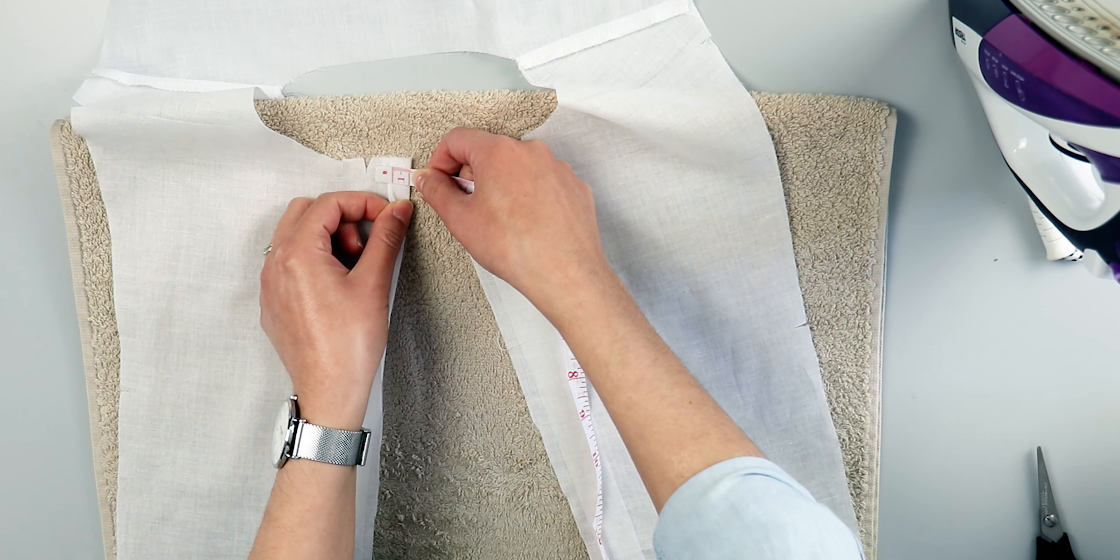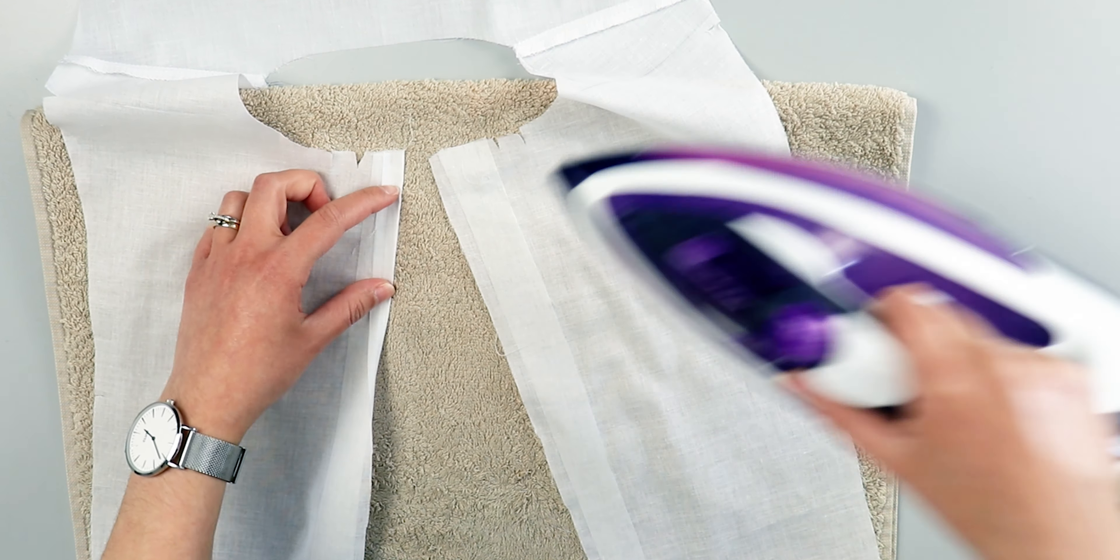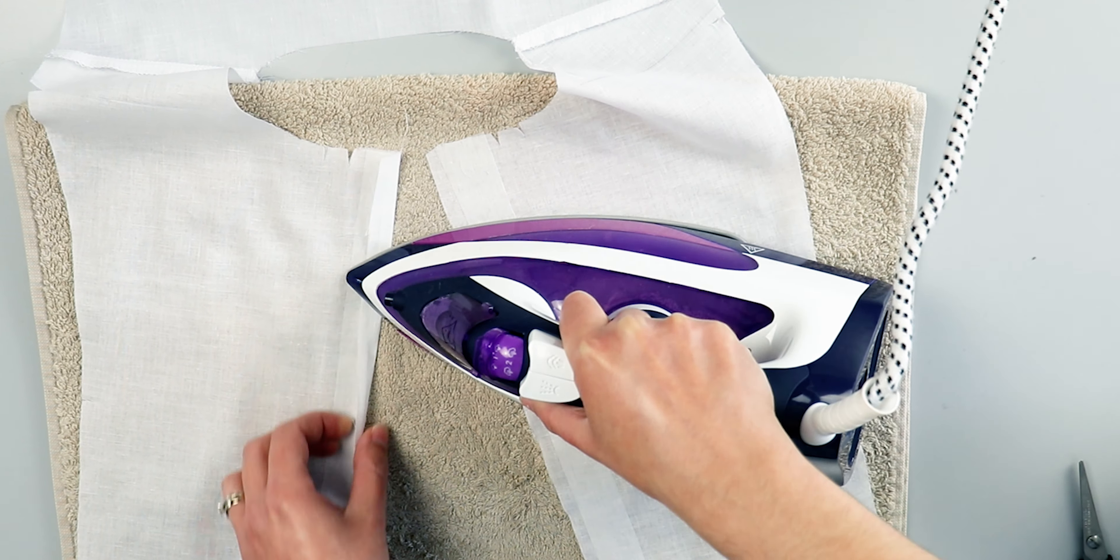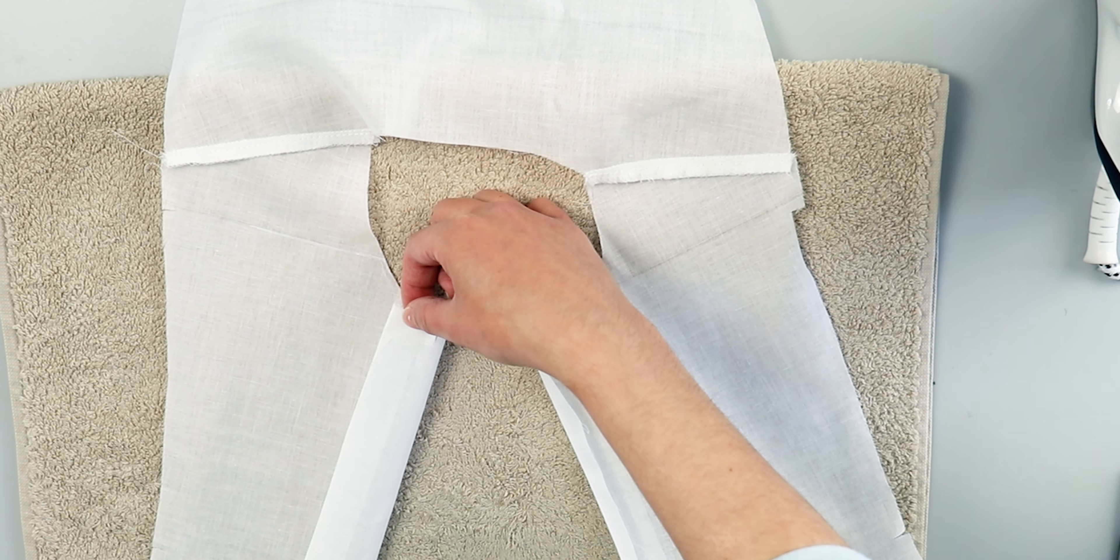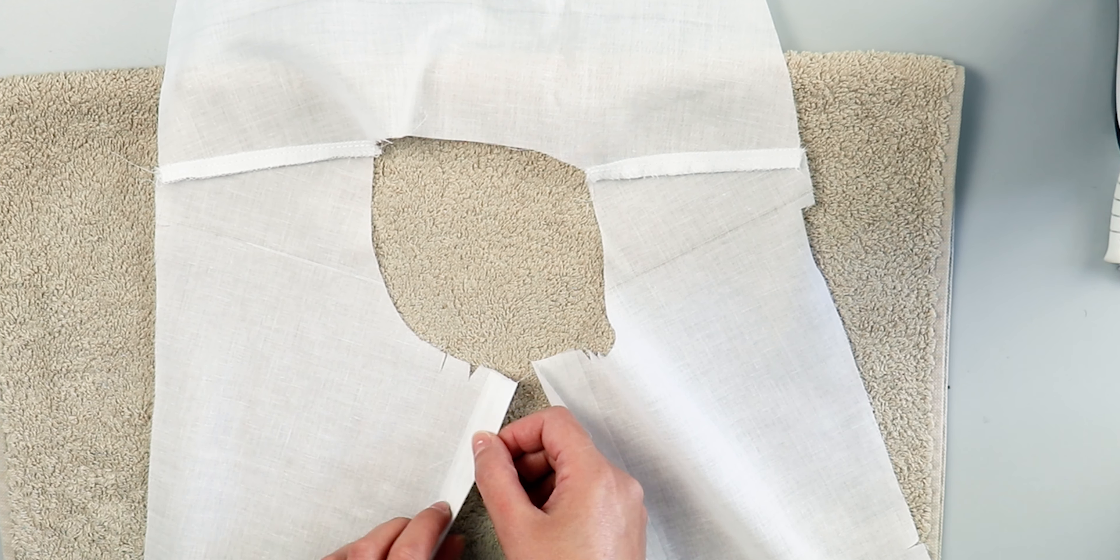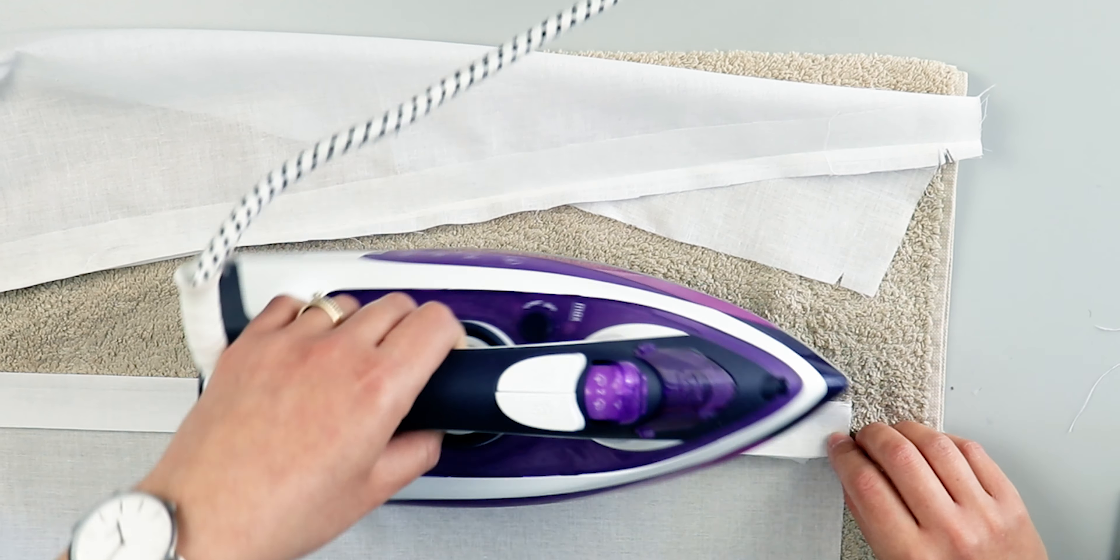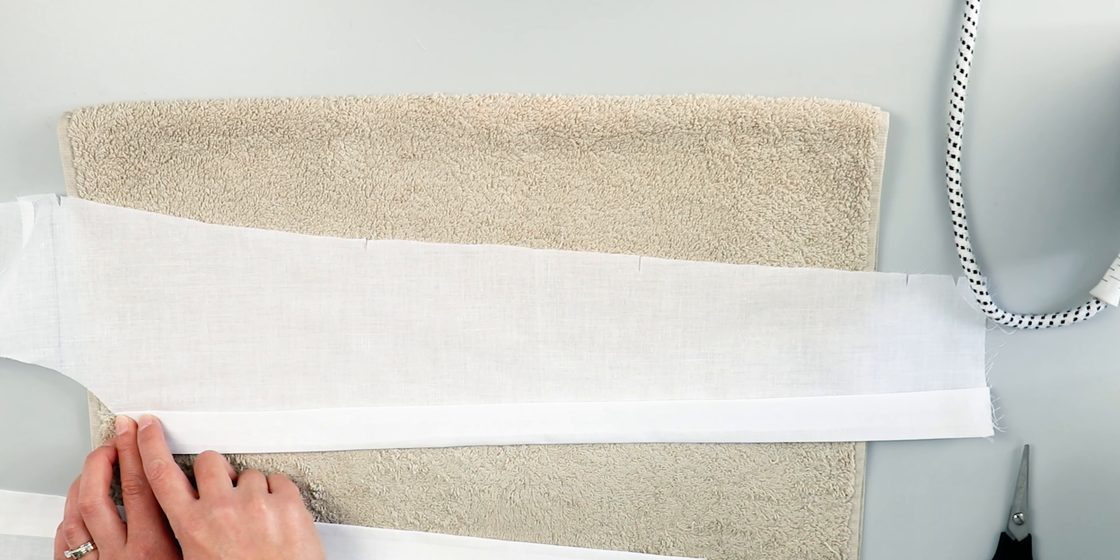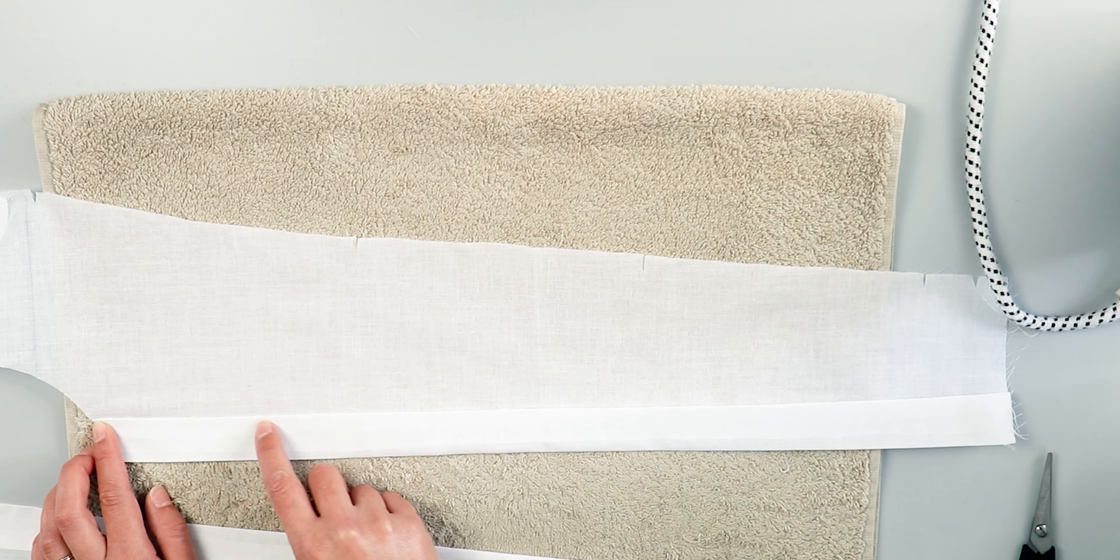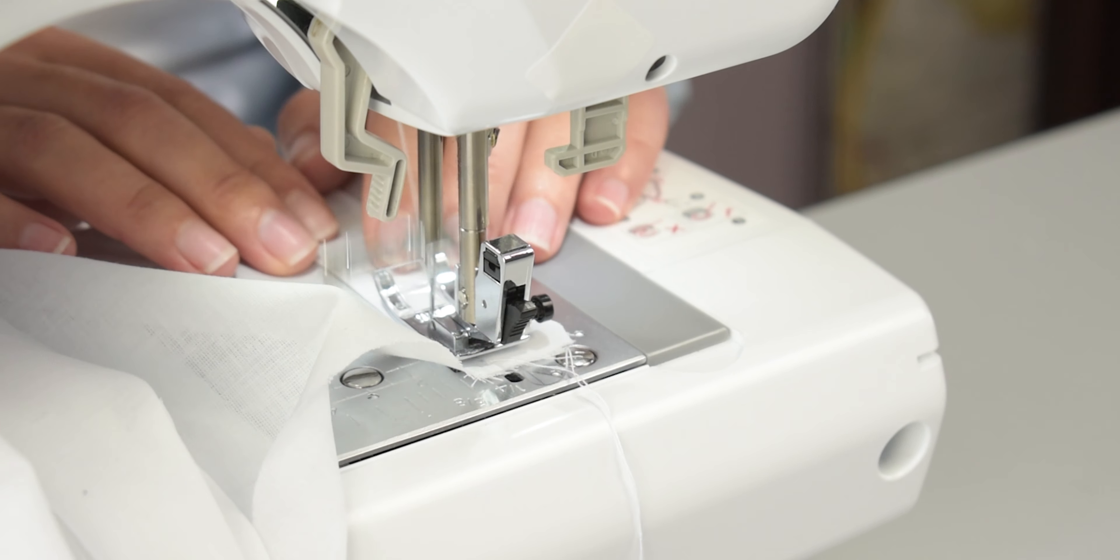Iron the seam allowance at the center front by 1cm over to the wrong side like this. Next, fold over the center front once more where we have the V-notches already cut in the fabric. Make sure to do this for both sides. Sew along the edge of the center front here to keep it in place, and again, do this for both sides.